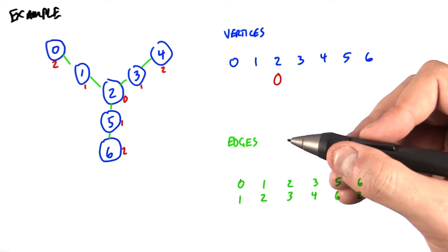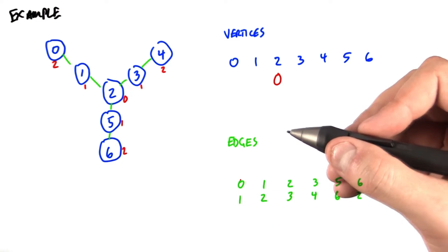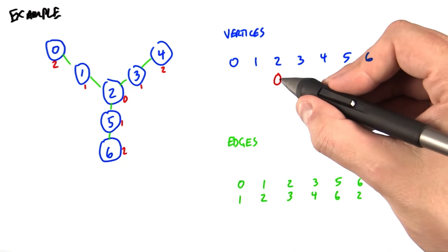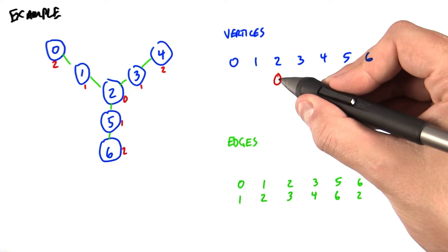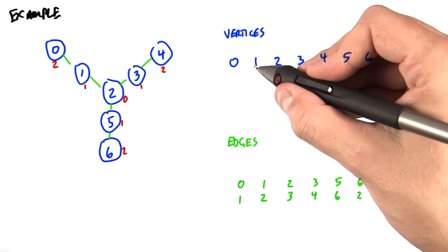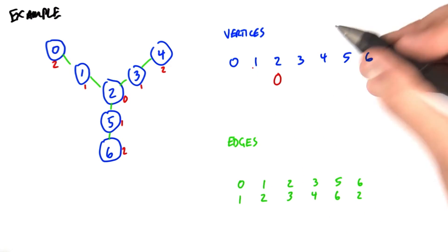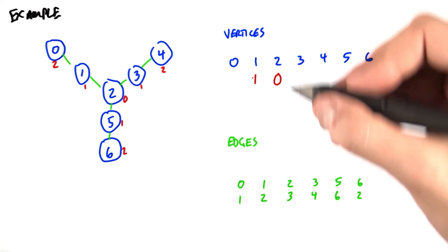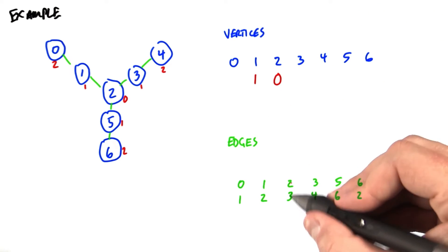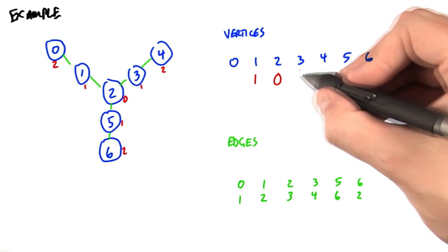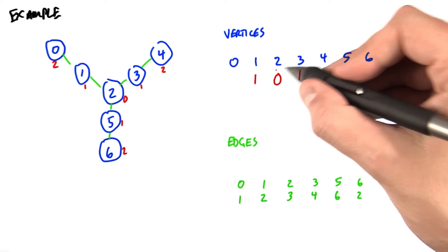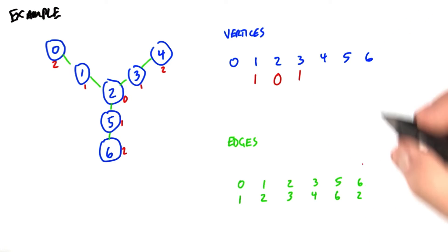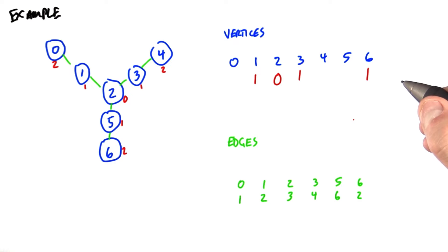We're going to find that three edges have this particular quality. One of them is going to be the edge between 1 and 2 — the depth at vertex 2 is 0, and vertex 1 has not been visited yet, so we'll set it equal to 0 plus 1, which is 1. We'll do the same thing for the edge between 2 and 3: we visited 2, its value is 0, we haven't visited 3, so we set its value to 1. And this edge here, 2 and 6. Now we complete the first iteration.